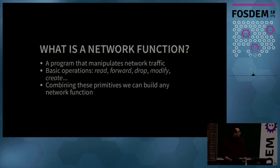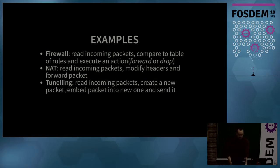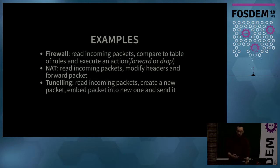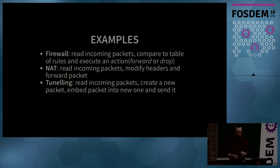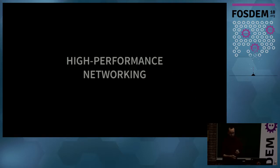Combining these primitives, you can build any network function. For example, a firewall essentially reads incoming packets, compares them to a table of rules, and executes an action — either forwarding or dropping the packet. A network address translator modifies headers, source IP, destination IP, recalculates checksums, and forwards the packet. A tunneling application gets incoming packets, creates new ones, embeds the old one into the new one, and sends it through the network.